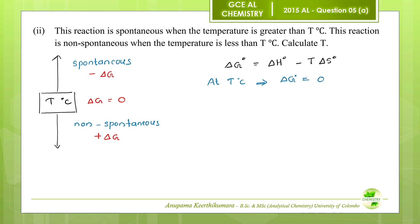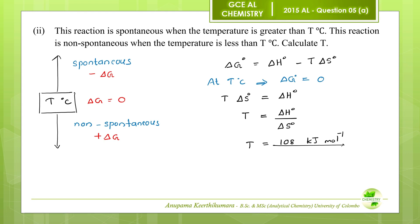At T°C, ΔG° equals zero. Therefore, T·ΔS° equals ΔH°, and temperature equals ΔH° divided by ΔS°. Standard enthalpy change is 108 kJ/mol, and standard entropy change is 120 J/K/mol, which we convert to 0.120 kJ/K/mol. Therefore, the temperature is 900 Kelvin.